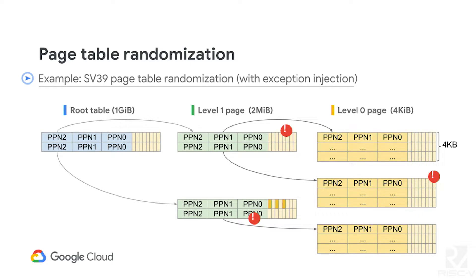Here's an example of what we do about page table randomization. We support multi-level page tables with many different types of exceptions. You can have leaf page table entries or link page table entries at any level — if a leaf appears at the bottom level, that means there's an exception. When generating page tables, we are not only generating valid entries but also generating many exception cases, to make sure your processor can actually handle them, go to the trap handler, and resume execution from there. This is quite a challenge for the processor.